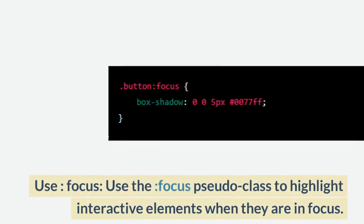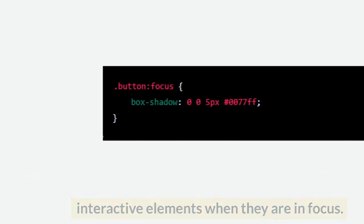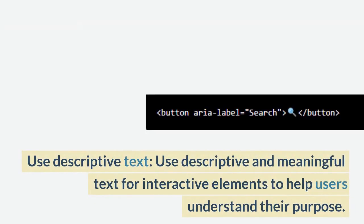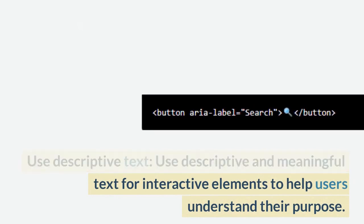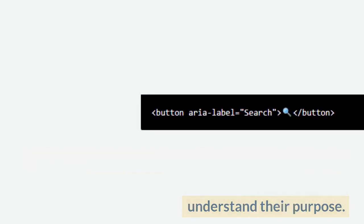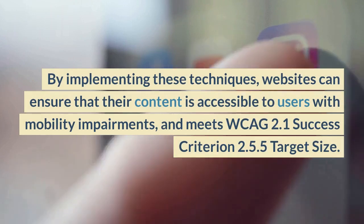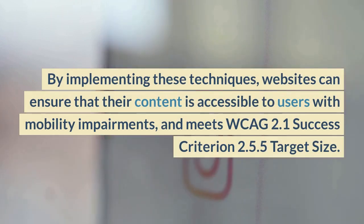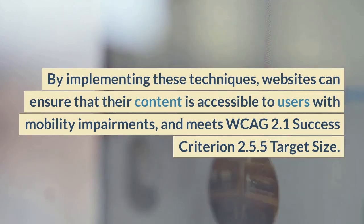Use the focus pseudo-class to highlight interactive elements when they are in focus. Use descriptive and meaningful text for interactive elements to help users understand their purpose. By implementing these techniques, websites can ensure that their content is accessible to users with mobility impairments and meets WCAG 2.1 Success Criterion 2.5.5 Target Size.